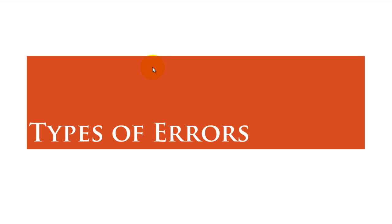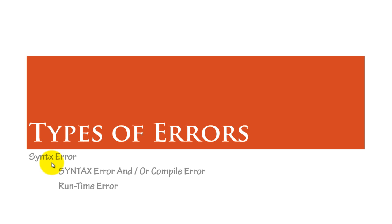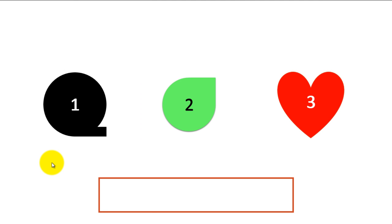The first type of error you often see is called a syntax error. A syntax error is where the syntax is written wrongly. Syntax errors and compile errors are the first kind we'll talk about today — I'm writing both together because when you make a mistake in the syntax, you will get a message box in VBA saying it's a compile error. The other type of error is the runtime error.